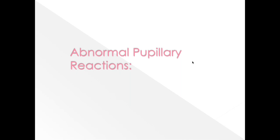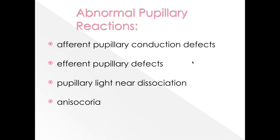Abnormal pupillary reactions can be divided into four categories: afferent pupillary conduction defect (problem in the sensory/optic nerve pathway); efferent pupillary defect (problem in the motor pathway, carried by the third cranial nerve); light-near dissociation (pupil responds better to near than to light); and anisocoria (difference in size between the two pupils).